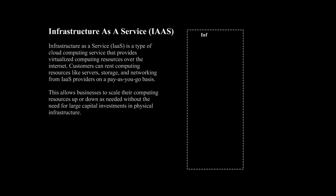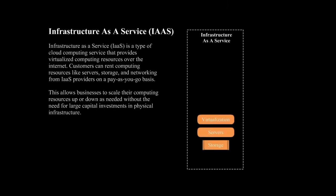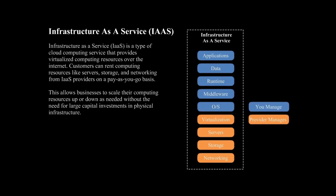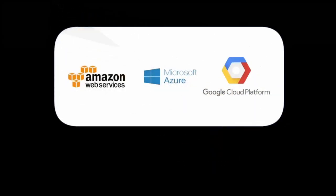Infrastructure-as-a-Service is a type of cloud computing service that provides virtualized computing resources over the internet. Customers can rent computing resources like servers, storage, and networking from Infrastructure-as-a-Service providers on a pay-as-you-go basis. This allows businesses to scale their computing resources up or down as needed without the need for large capital investments in physical infrastructure. Amazon Web Services, Microsoft Azure, and Google Cloud Platform are the main cloud service providers.